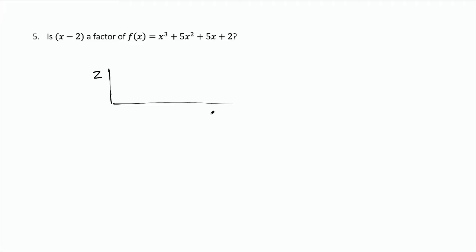We're looking for a zero remainder, because if the remainder is zero, that means f of 2 is zero, which of course means that x minus 2 is a factor of this.